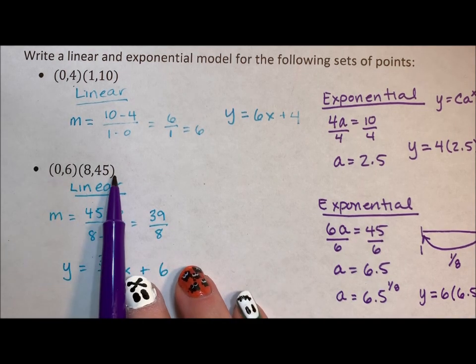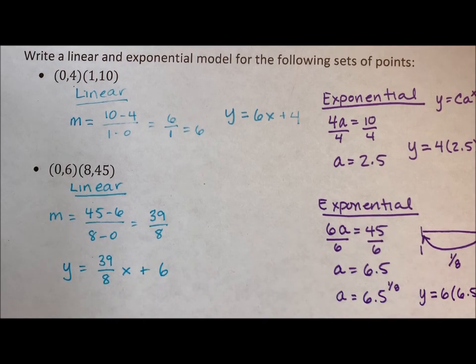Because x isn't going up by one, it's going up by eight. So we take that input and we divide it by eight.